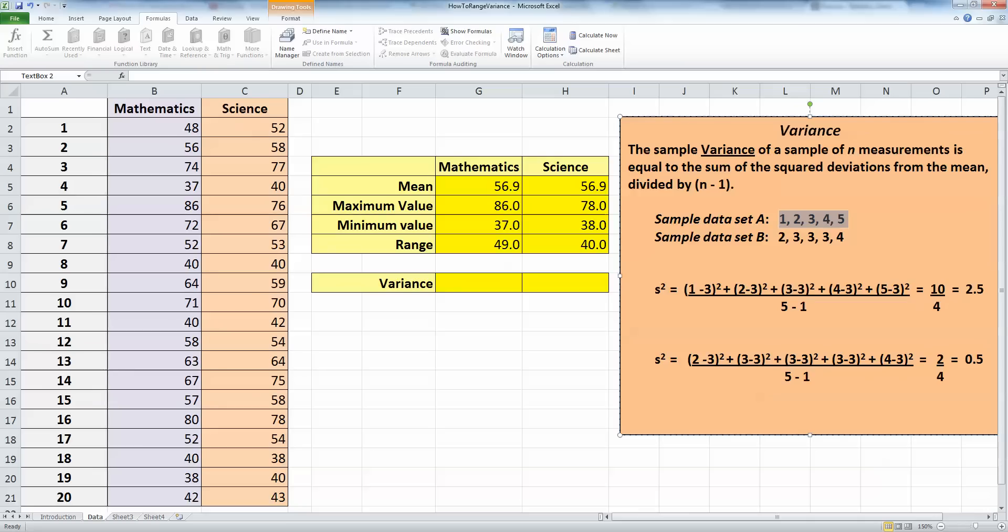So when we square all these deviations from the mean and add them all up, we get a value of 10. We divide that by n minus 1, n is 5, so 5 minus 1 is 4. 10 over 4 gives us a value of 2.5.